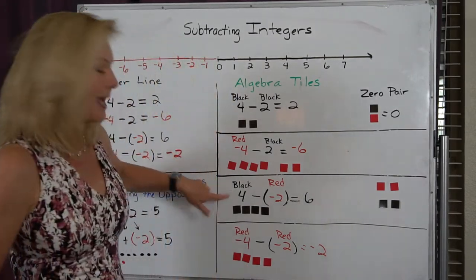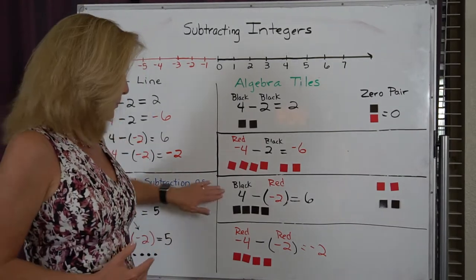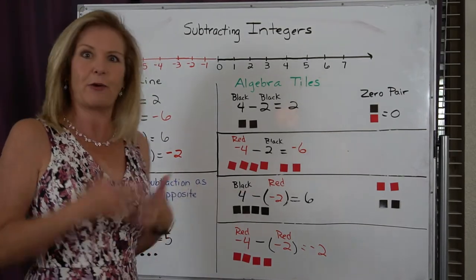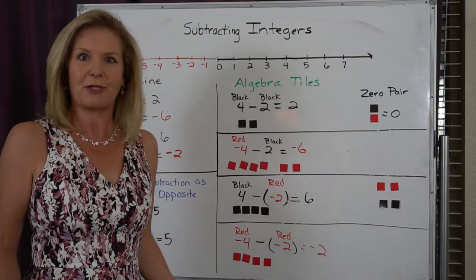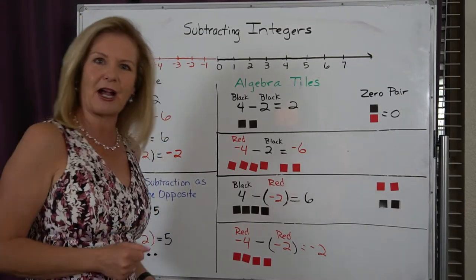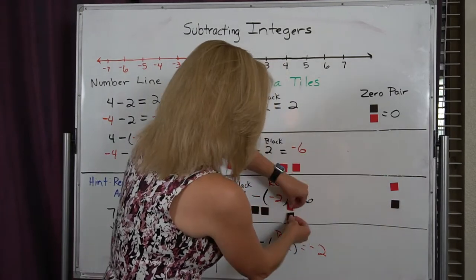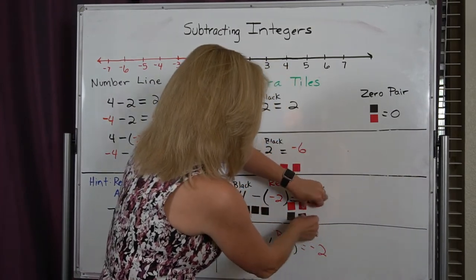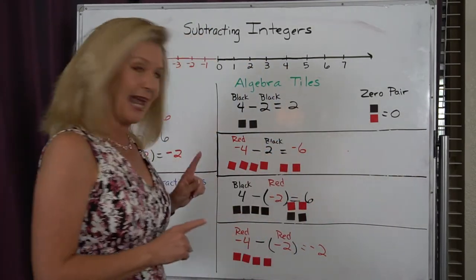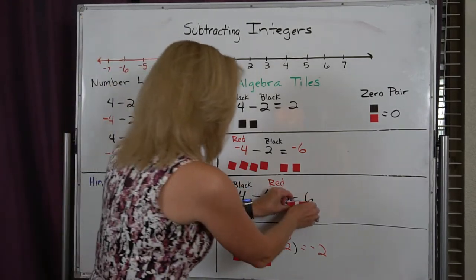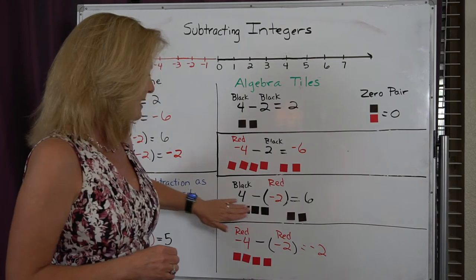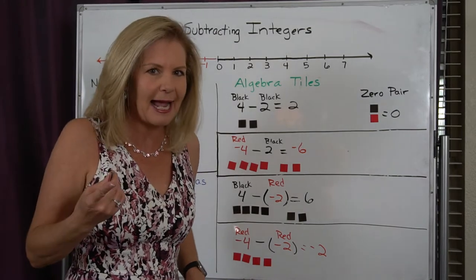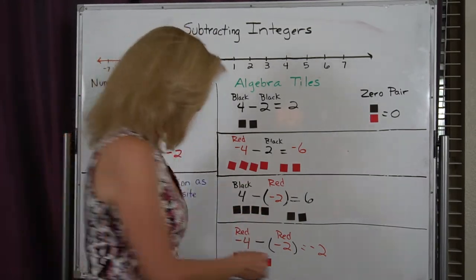For positive 4 minus negative 2, I've got to put those four blacks down. From there, I've got to take away two reds, but I don't have two reds to take away. So again, I go back to zero pairs — I pull over my zero pairs, I still have a positive 4, then a second zero pair, I still have a positive 4, but now I've got my two reds that I can take away. I take away those two reds, and I can see that 4 minus negative 2 is positive 6. It's not what we think is going to happen, but when we see it visually, we understand why.